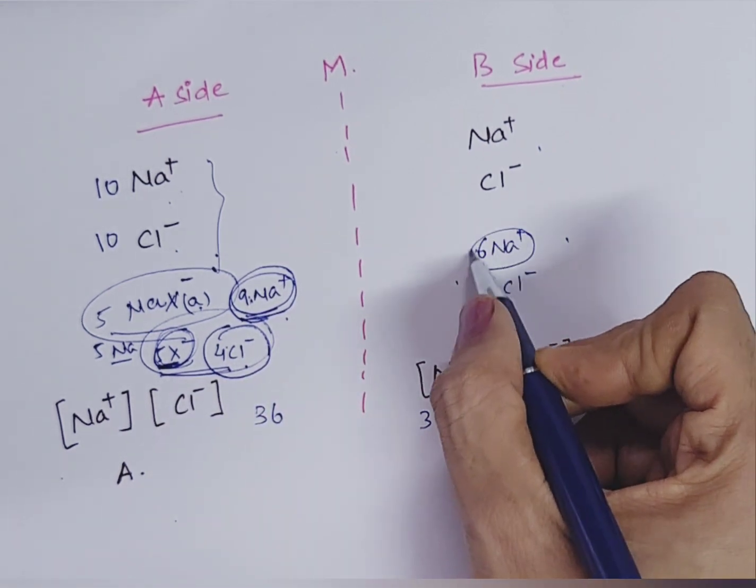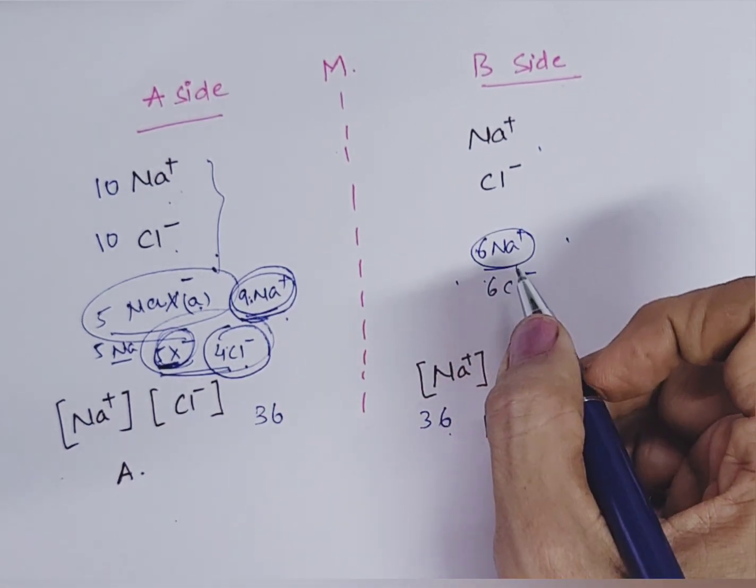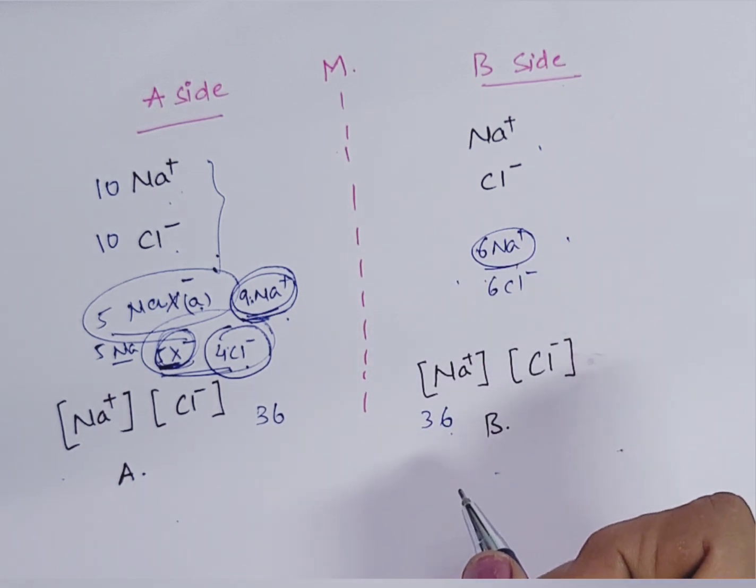Diffusible cations on the other side are less. So this is Donnan equilibrium. What is the application of this Gibbs-Donnan equilibrium?